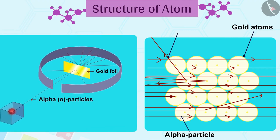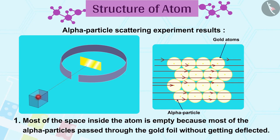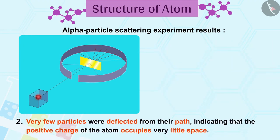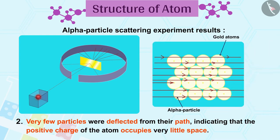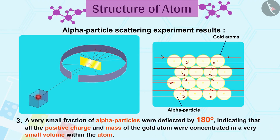Rutherford derived the following results based on the alpha particle scattering experiment. 1. Most of the space inside the atom is empty because most of the alpha particles passed through the gold foil without getting deflected. 2. Very few particles were deflected from their path, indicating that the positive charge of the atom occupies very little space. 3. A very small fraction of alpha particles were deflected by 180 degrees, indicating that all the positive charge and mass of the gold atom were concentrated in a very small volume within the atom.